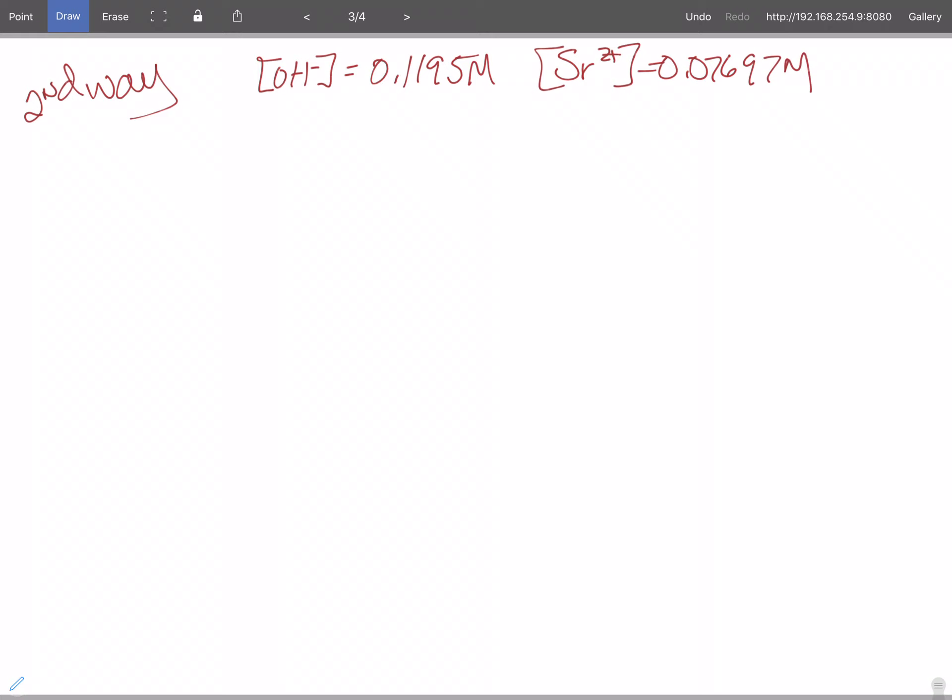we know that precipitation starts when Q is equal to Ksp. And pH is related to the concentration of hydroxide.